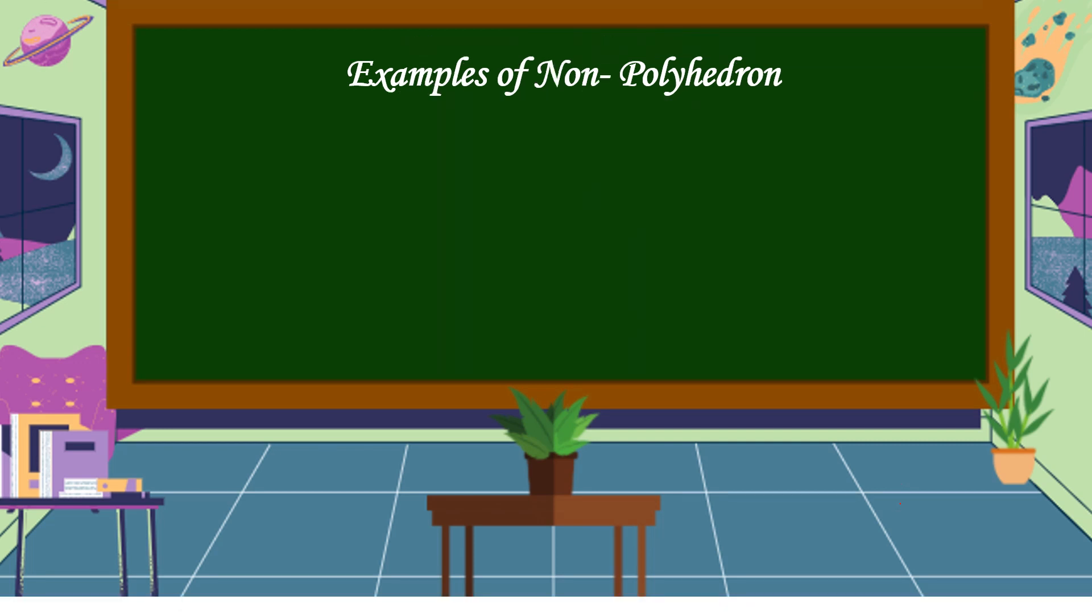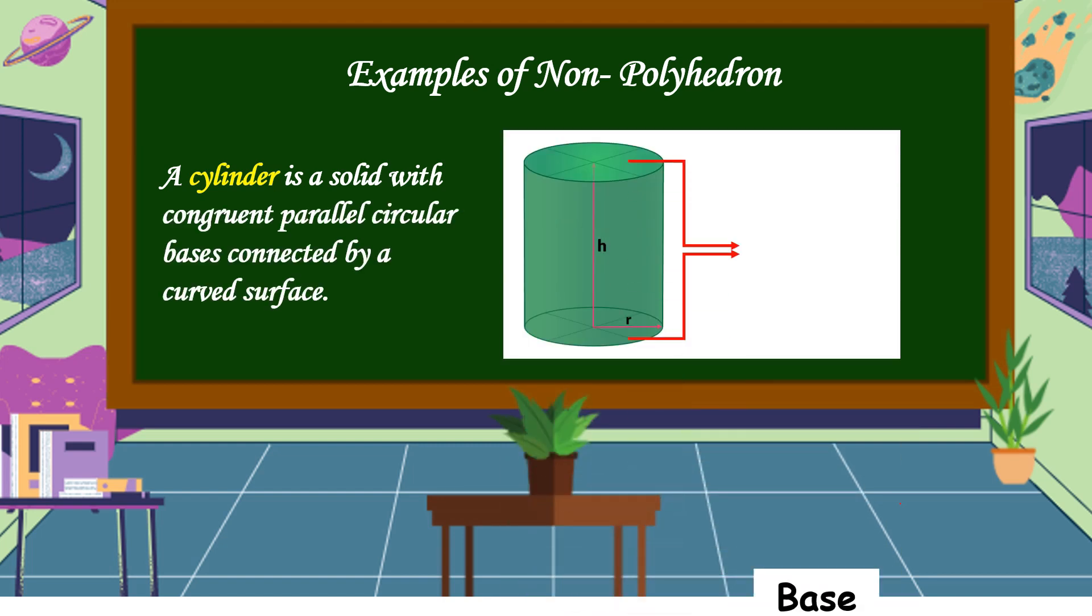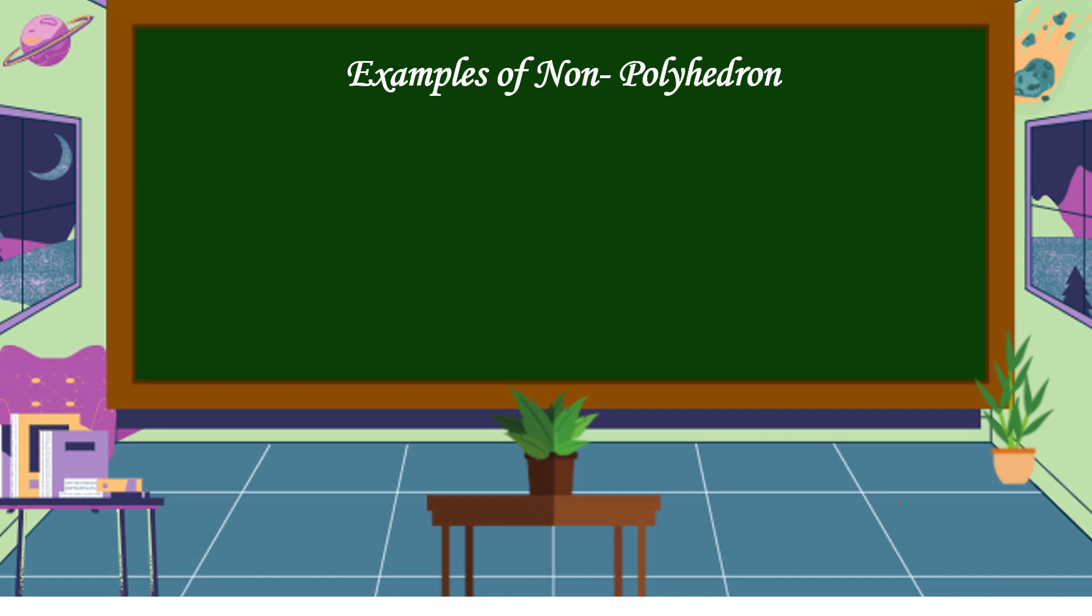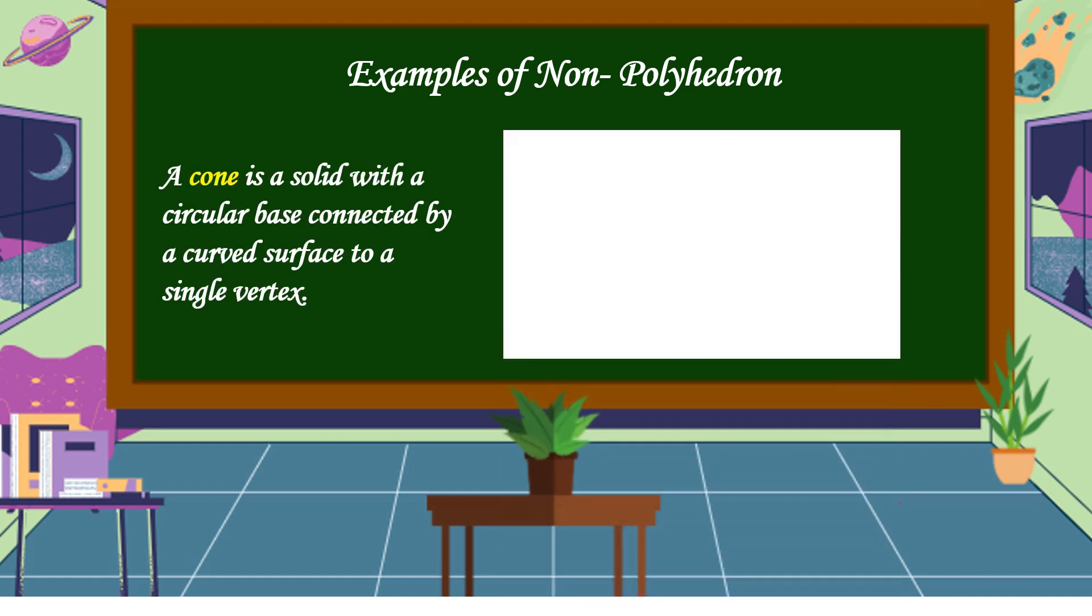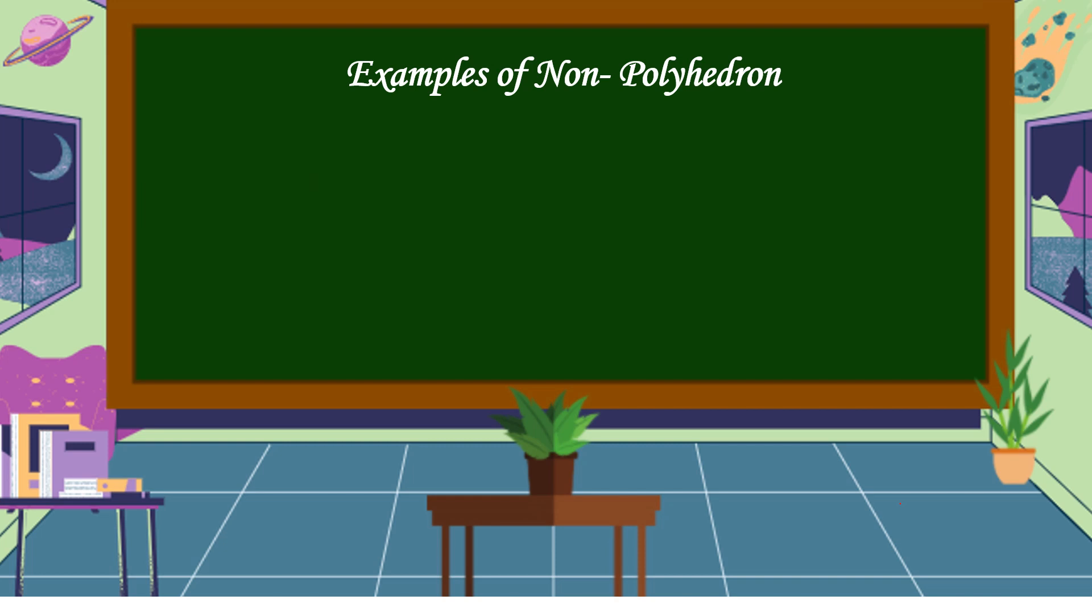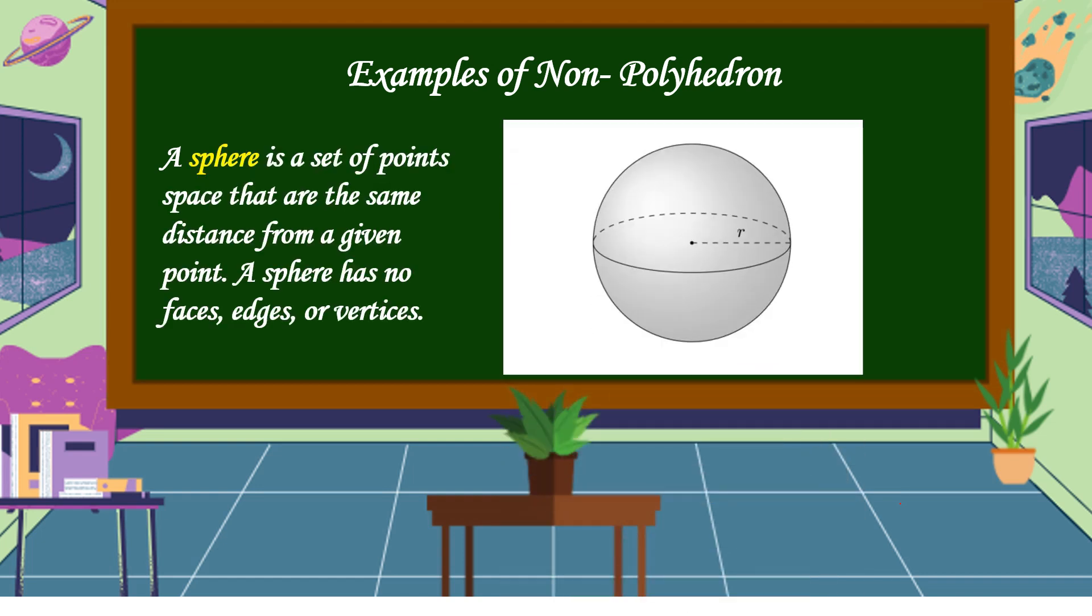Examples of non-polyhedron. Number one, a cylinder. What is a cylinder? A cylinder is a solid with congruent parallel circular bases connected by a curved surface. Next is a cone. What is a cone? A cone is a solid with a circular base connected by a curved surface to a single vertex. Lastly is a sphere. What is a sphere? A sphere is a set of points spaced that are the same distance from a given point. A sphere has no faces, edges, or vertices.